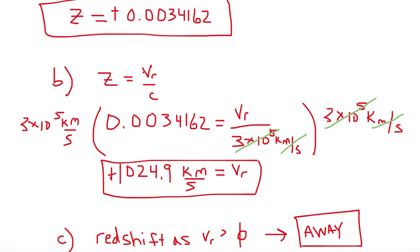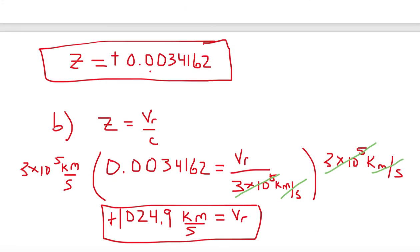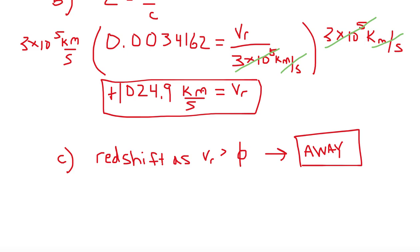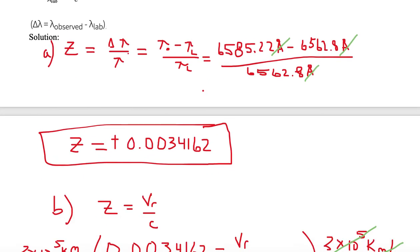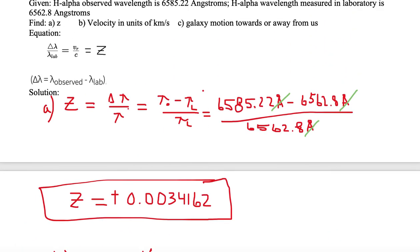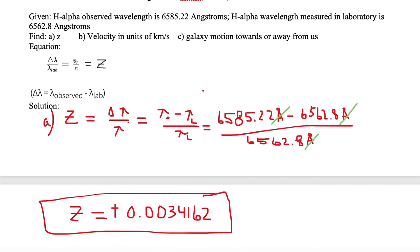Notice that our Z value is very small — much less than one. This is the speed at which the galaxy is moving away from us, in this case approximately 1024.9 kilometers per second.